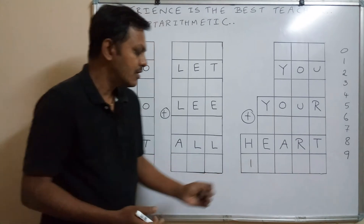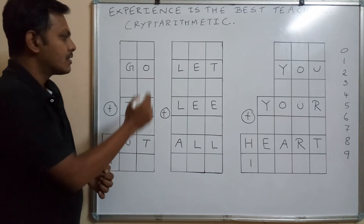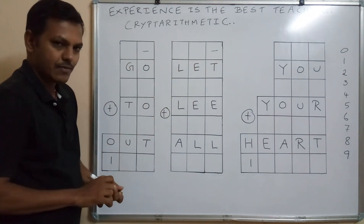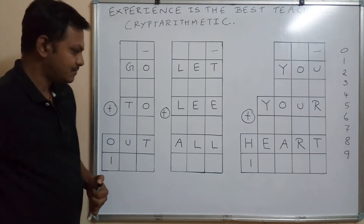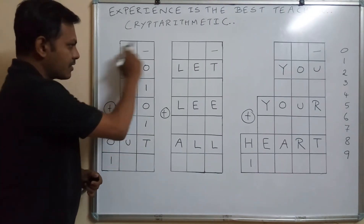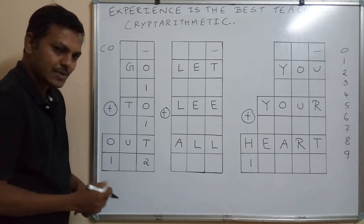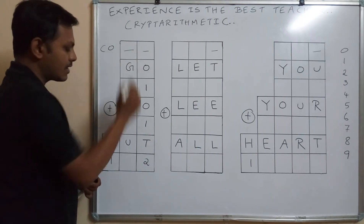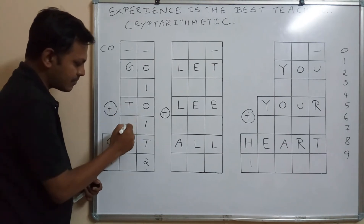You can start by writing number 1, then move to the next step. In all cryptarithmetic problems, keep in mind that the rightmost column cannot start with a carry over because there is no previous column — put a dash there. The top row is for carry over. Since alphabet O has been assigned number 1, we write 1 + 1 without carry over and get 2, which is a single digit.